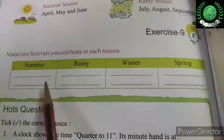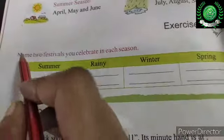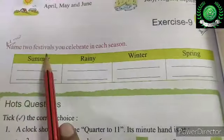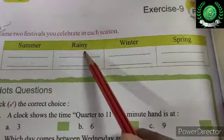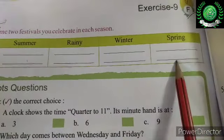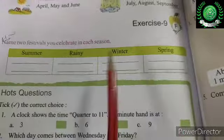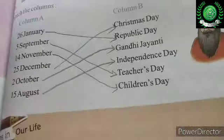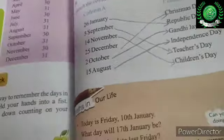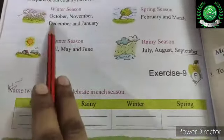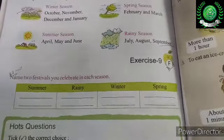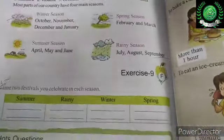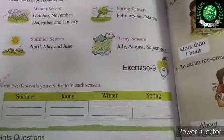Exercise 9F is your homework. Name two festivals celebrated in each season: which two festivals do we celebrate in summer, rainy season, winter, and spring? Write this in your homework copy along with the seasons and months.